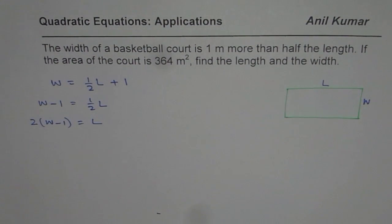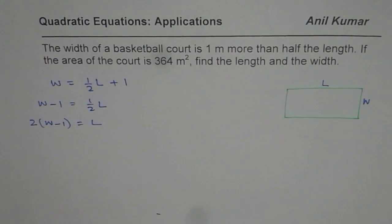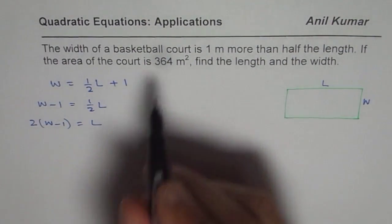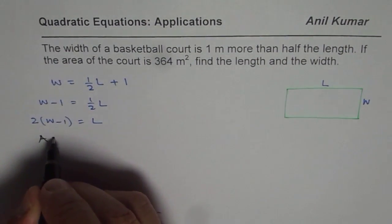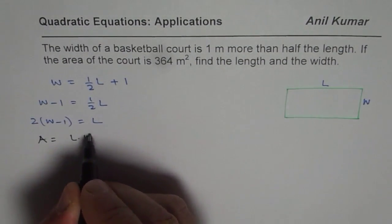So that is the relation between width and the length. Plus we are also given that the area of the rectangle is 364. So area equals 364, but area is length times width.